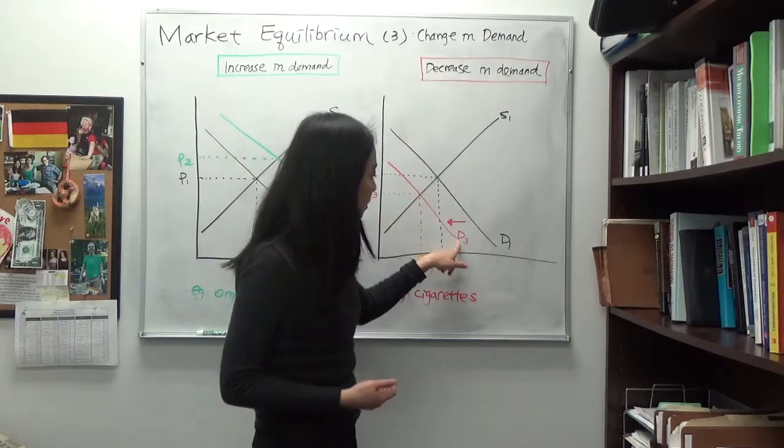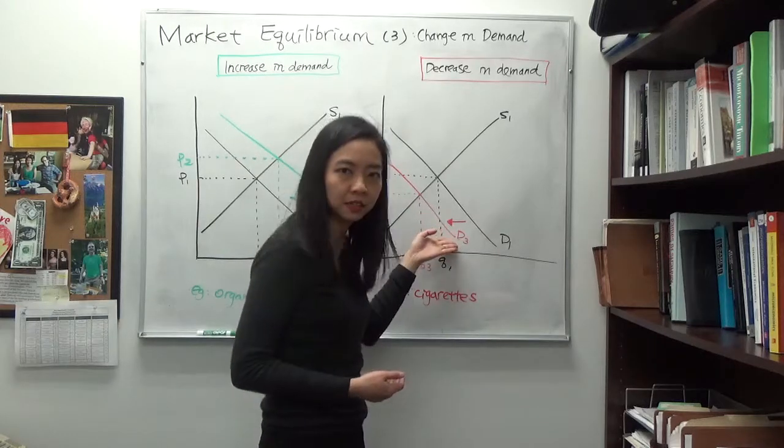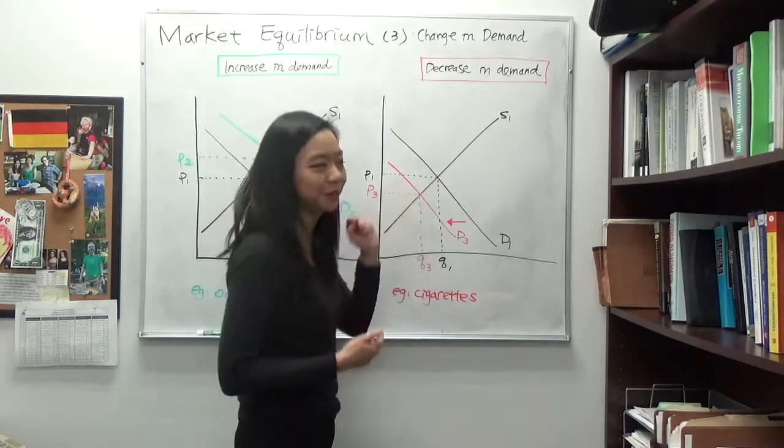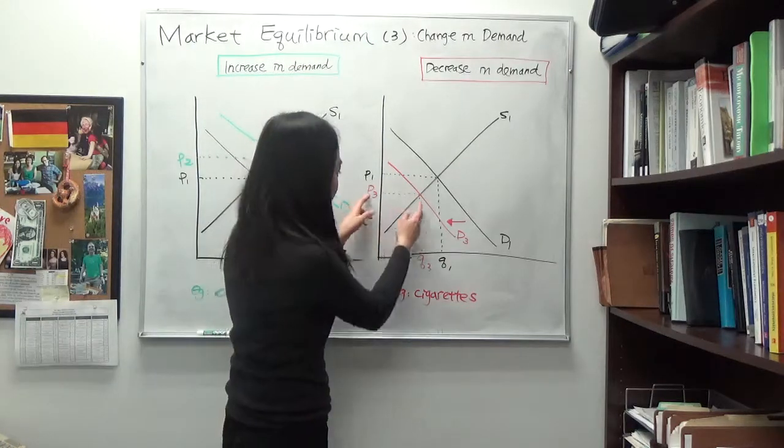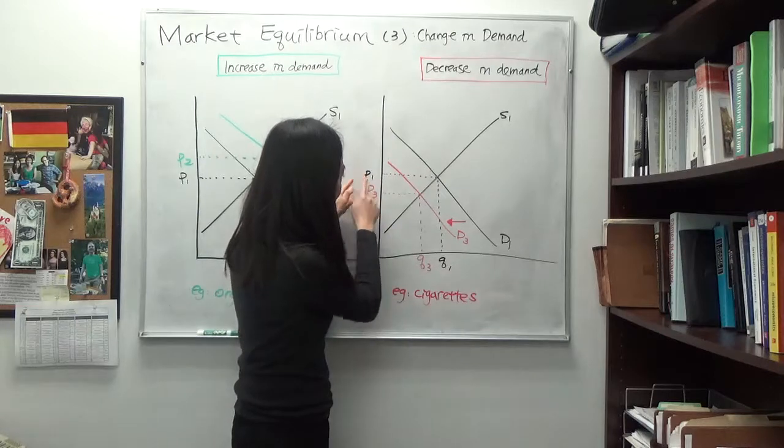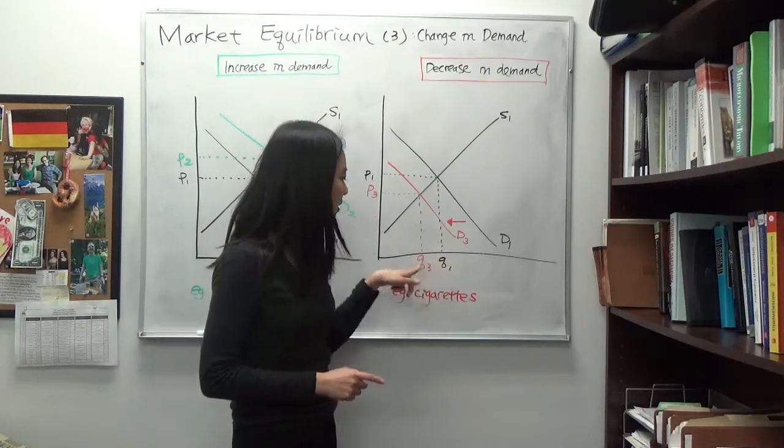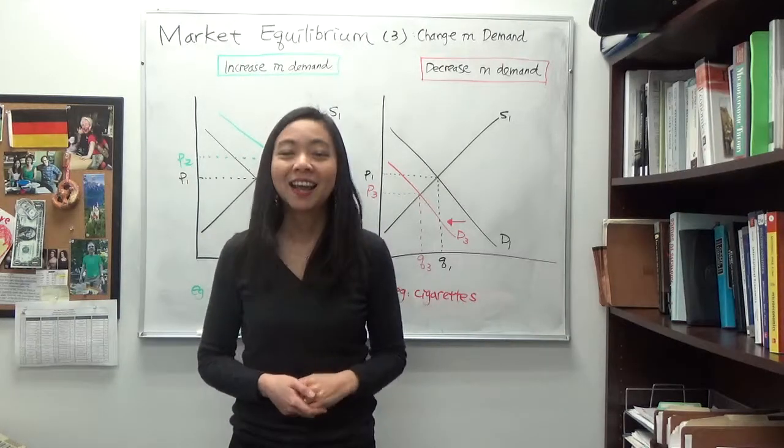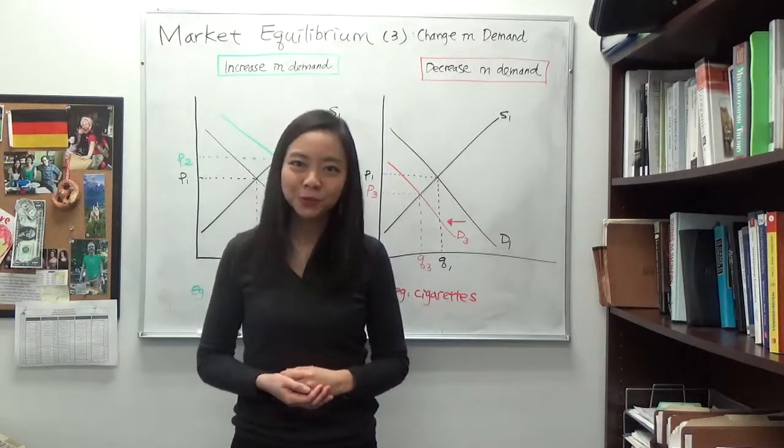And after you shift your demand curve, then you will have a new demand curve in your market, a different D, say D3 or D2, whatever that is. You will have a new intersection, a new price, a new quantity. Comparing the old price and new price, comparing the old quantity and new quantity, then you know what will happen to your market equilibrium. Thanks for watching and good luck with your studying.